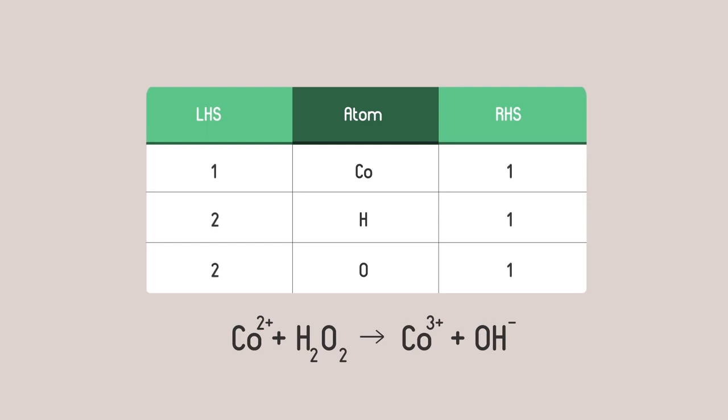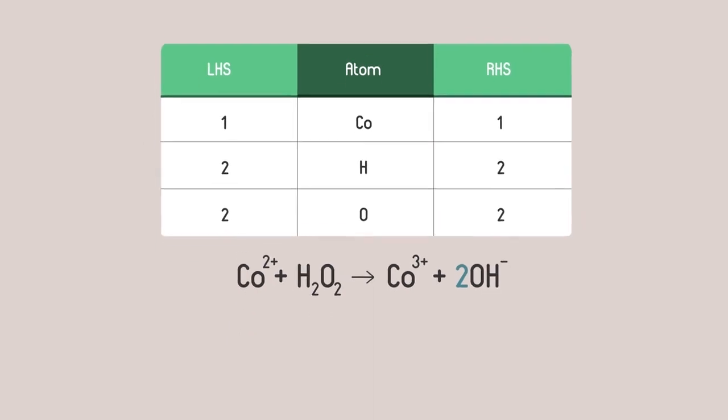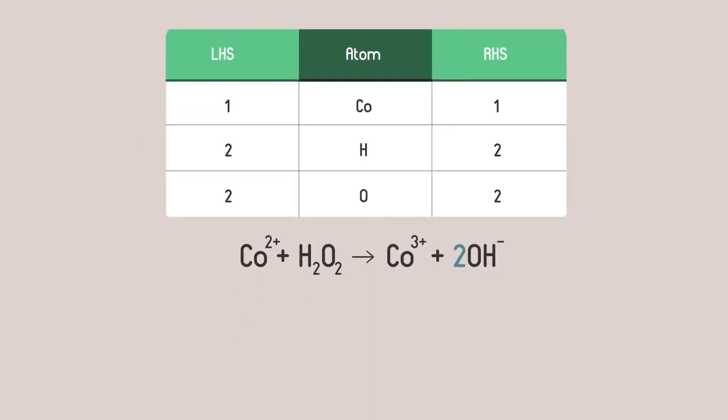There are half as many hydrogens and oxygens on the right as on the left, so let's double them. If we test this using our table to add up the atoms, it looks balanced.